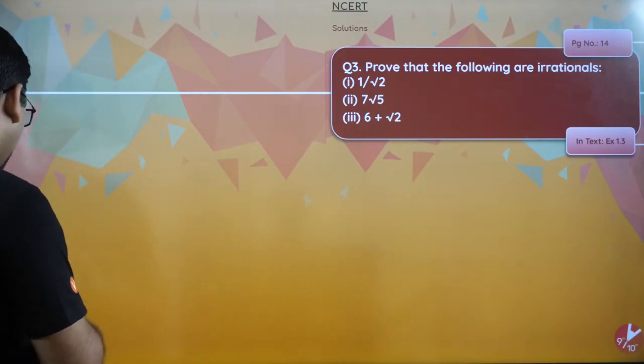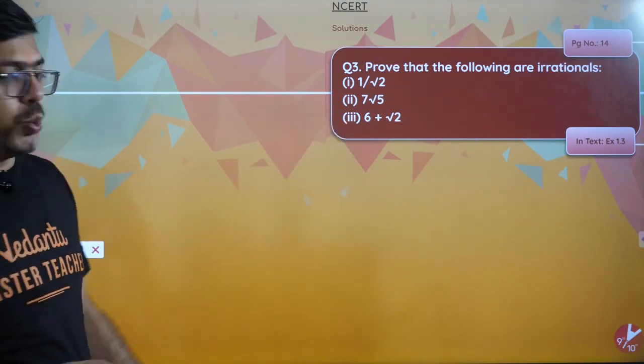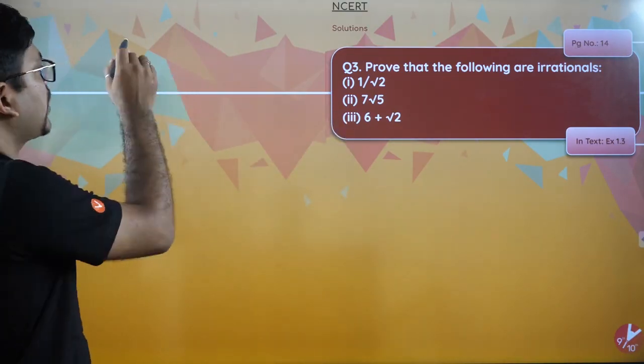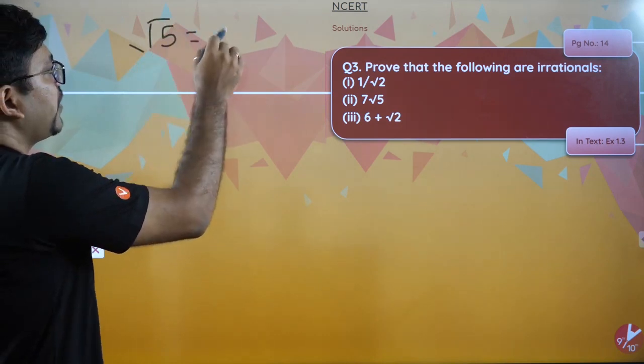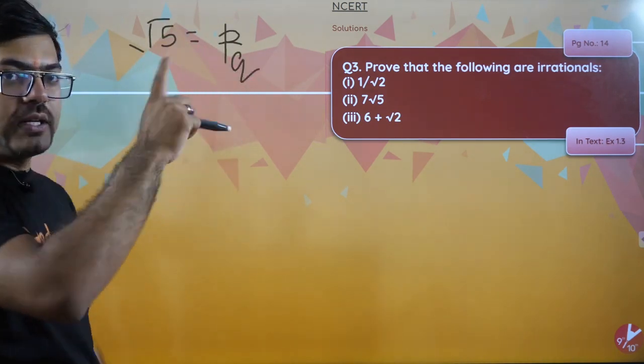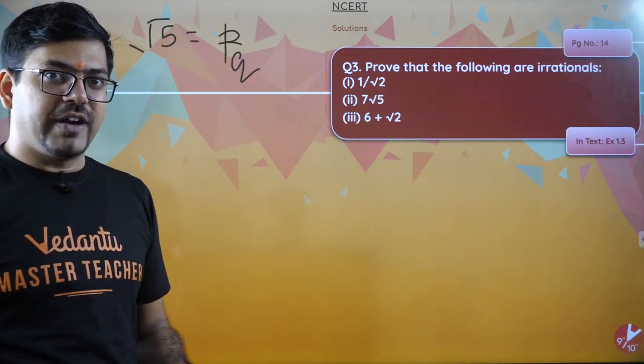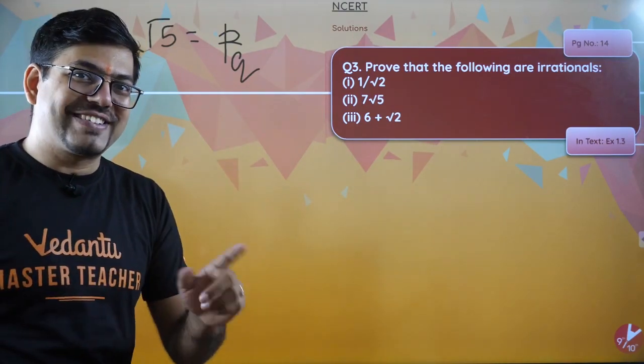For example, in that previous question we talked about root 5. I taught you that if you have root 5, you will assume it as p by q, then squaring both sides, putting 5 on this side, and then finding the common factors.